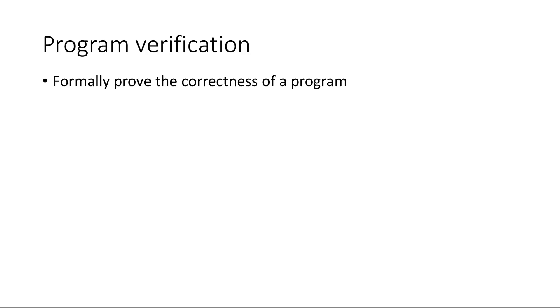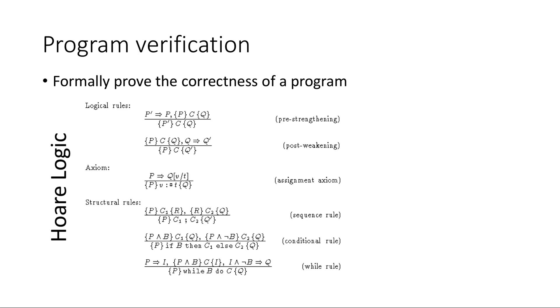Program verification is to formally prove the correctness of a program. Hoare logic is a fundamental approach to achieve such goal. The general idea is to reason the program step by step by following a number of logic rules as shown here.